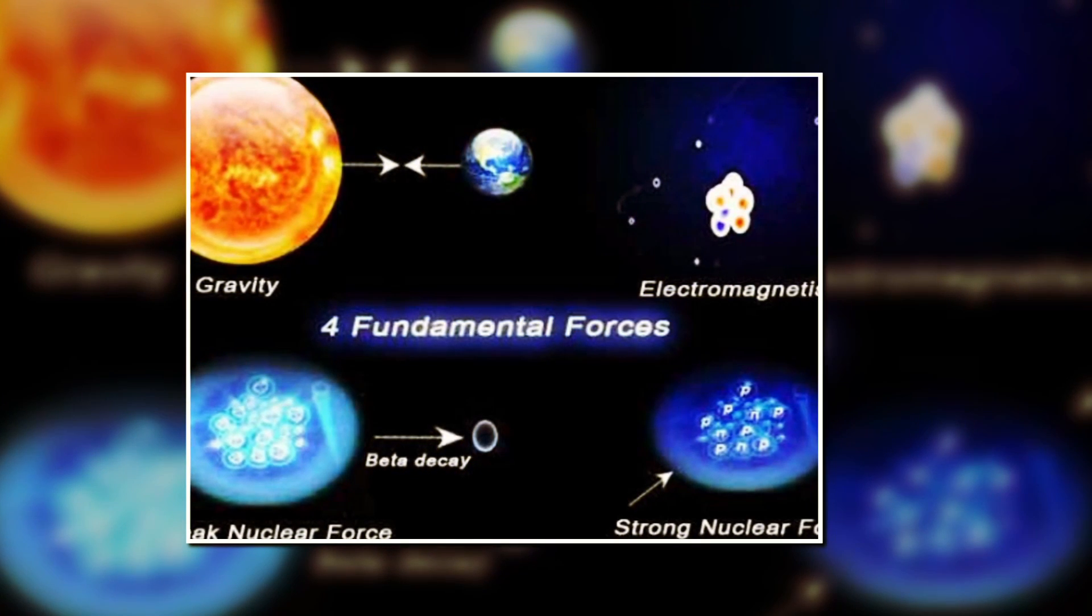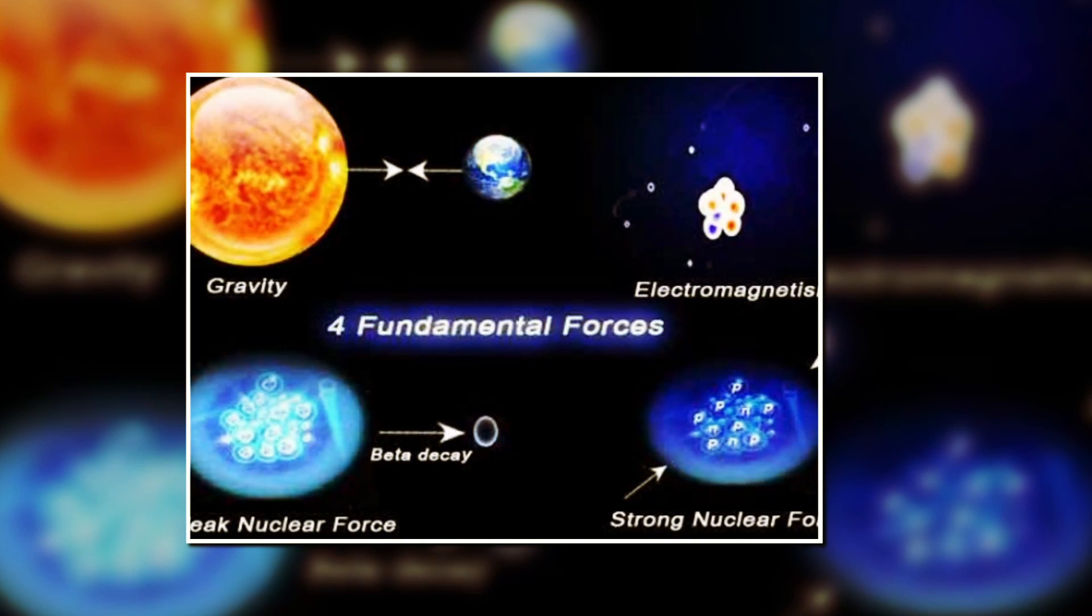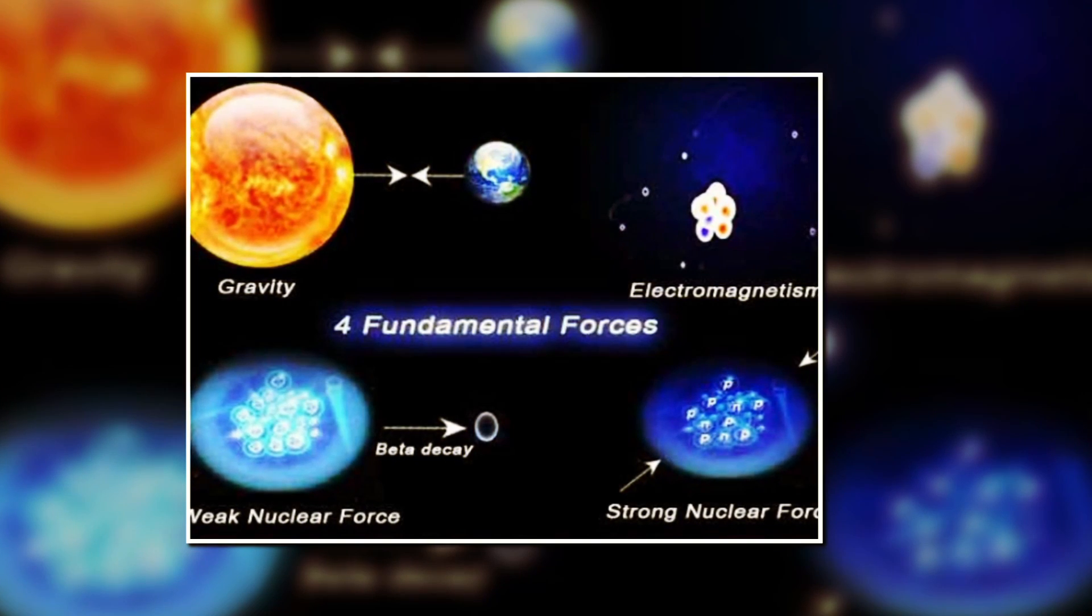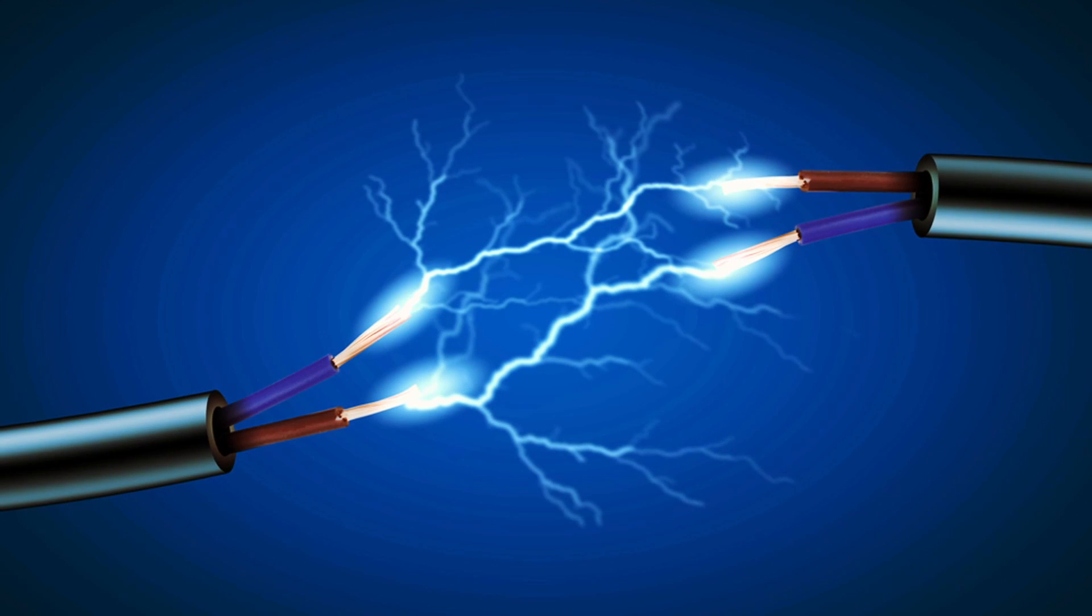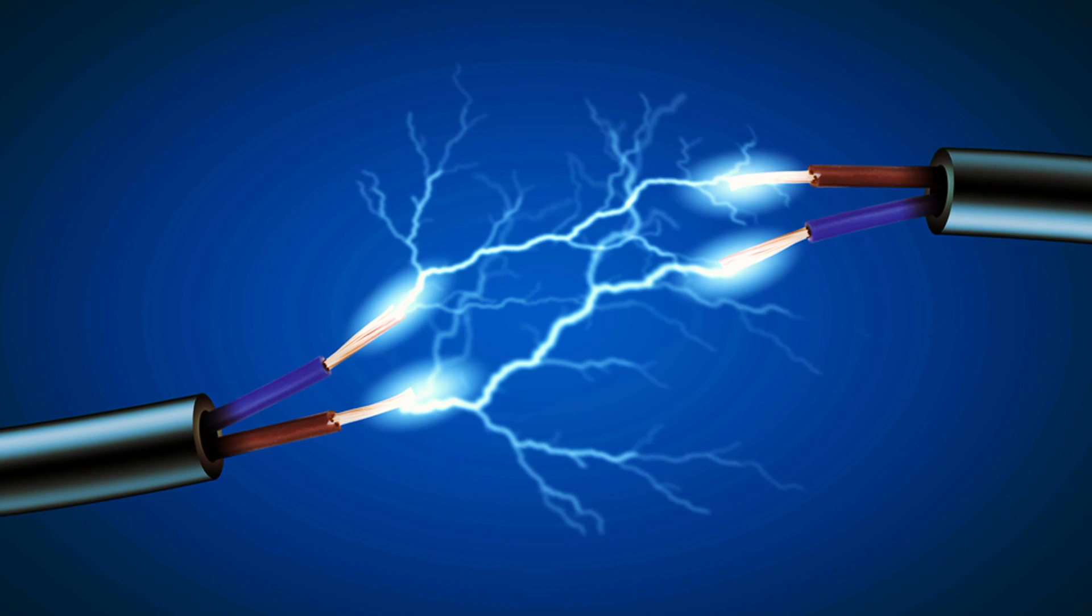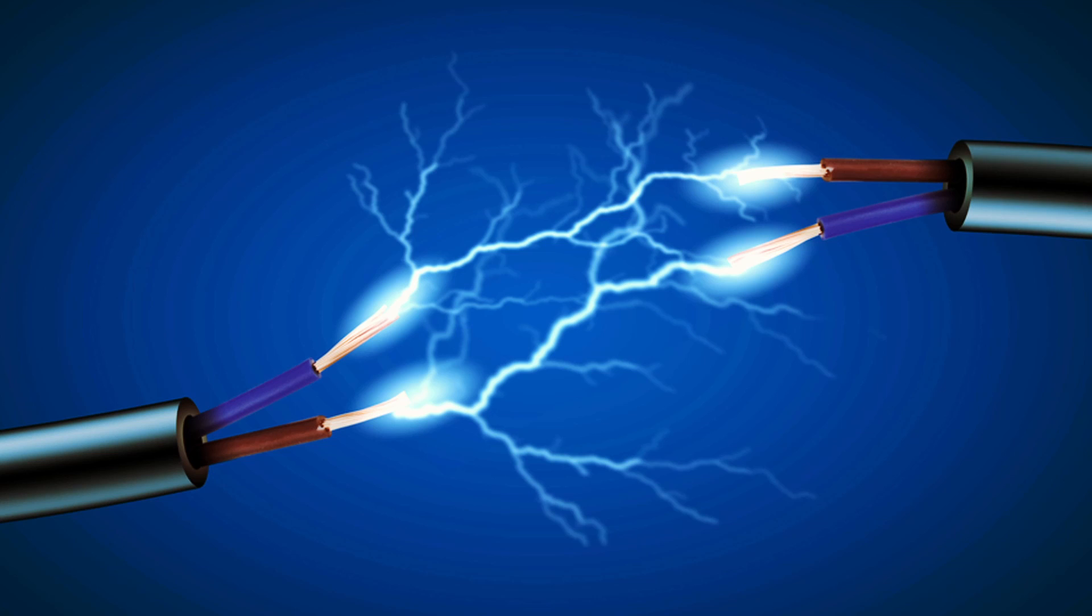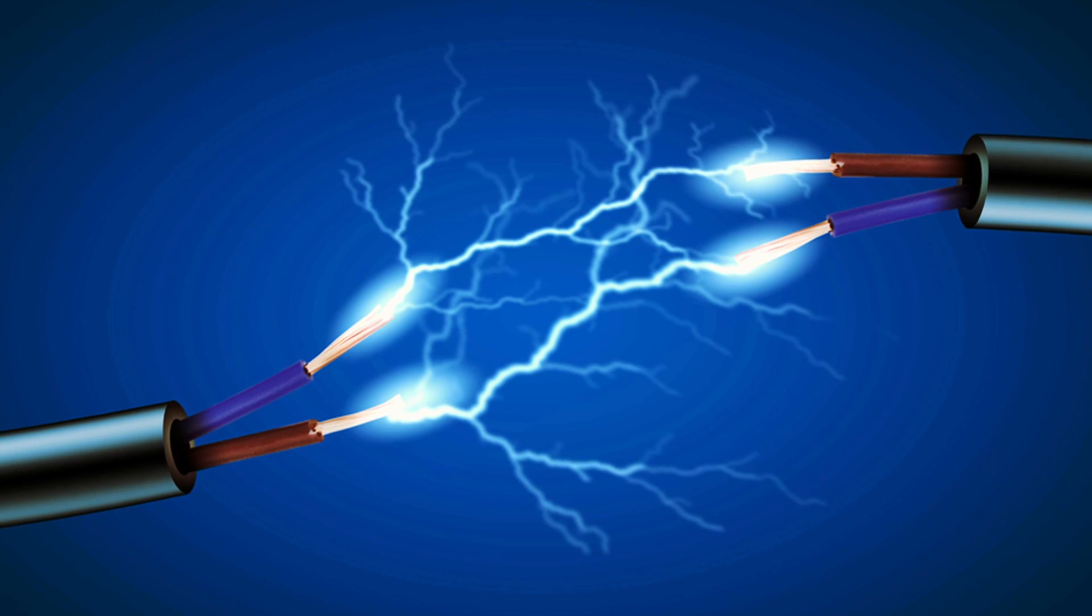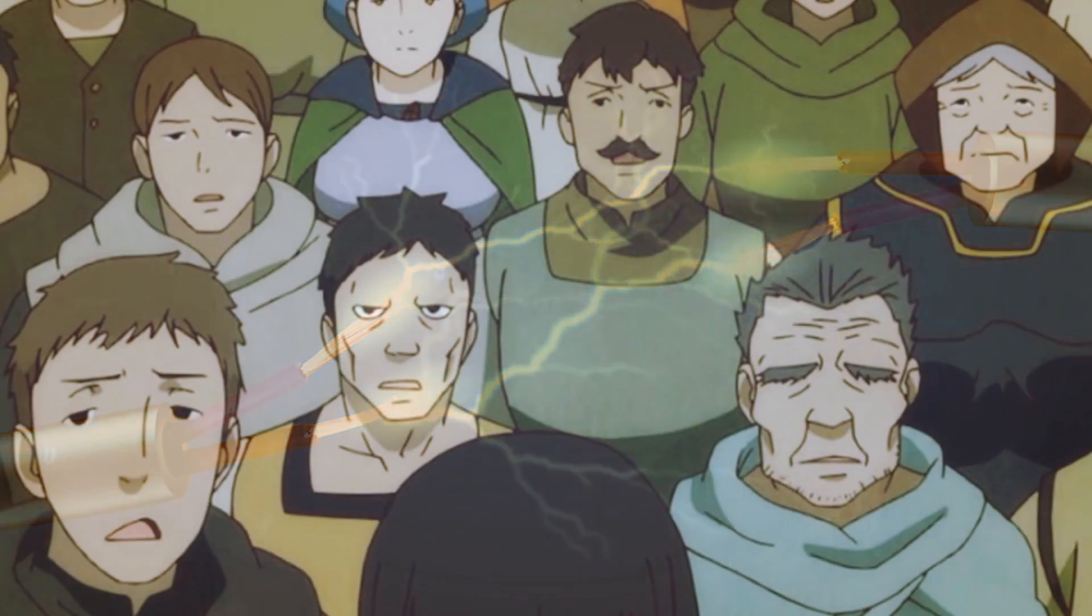Electromagnetism describes the behavior of electric charges, electric fields, magnetic fields, and their interactions. It includes the study of the behavior of charges at rest, or static electricity, as well as the behavior of charges in motion or current electricity. Electromagnetism also explains how electricity can be generated and how it can be used to create magnetic fields, and vice versa.